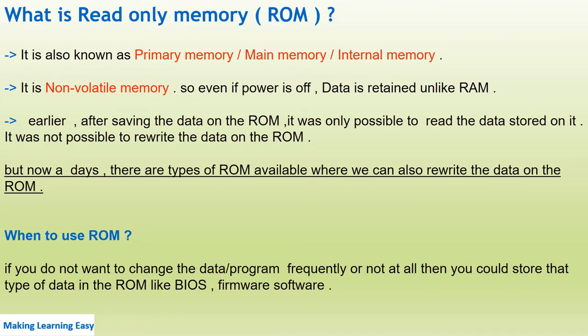Read-Only Memory is also known as primary memory, main memory, or internal memory. It is non-volatile memory, meaning if power is off, data is saved or retained inside the ROM. Earlier, after saving data on ROM, it was only possible to read the stored data — it was not possible to rewrite the data.